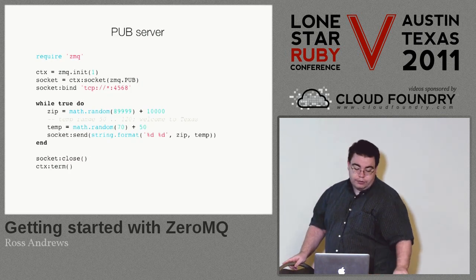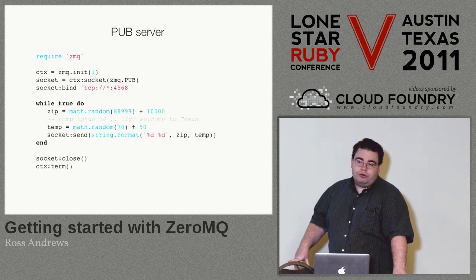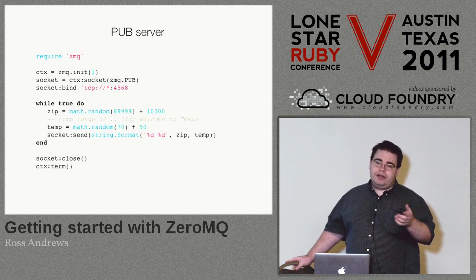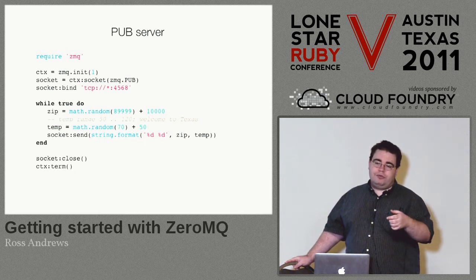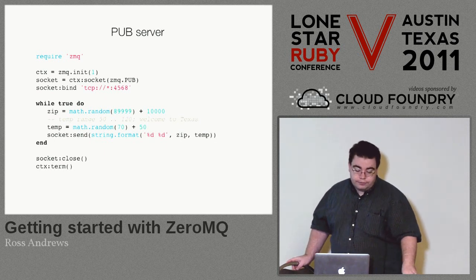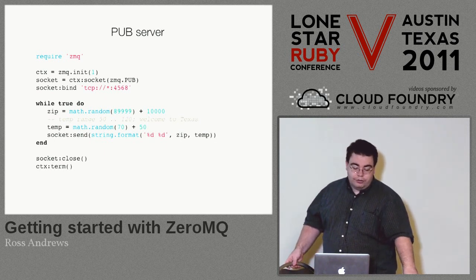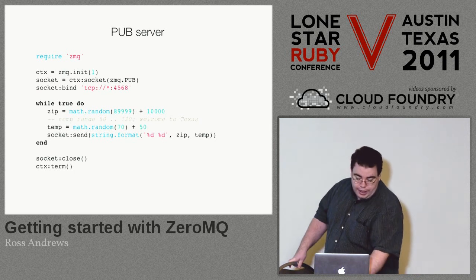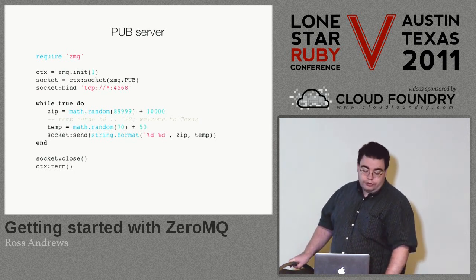The pub server does the same thing. Notice that the publisher, even though it's producing the data, is still binding to the port. This is just an artifact of TCP — subscribers can have multiple things connected to it, so it can't connect, it has to bind. That trips people up sometimes. It makes a random zip code, makes a random temperature between 50 and 120 — pretty reasonable for this summer — and then sends those two things separated by a space to the client.